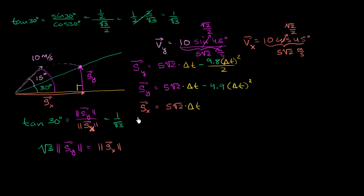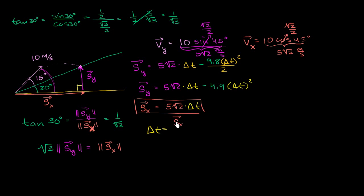This gives us a useful relationship between the two displacement vectors. Using the horizontal displacement equation, Δx = 5√2·Δt, we can solve for time: Δt = Δx / (5√2). Since both displacements are positive in our setup — upward and rightward — we can work with their signed values directly.